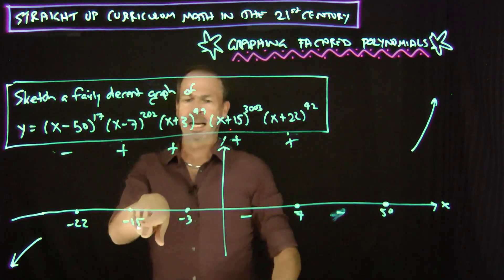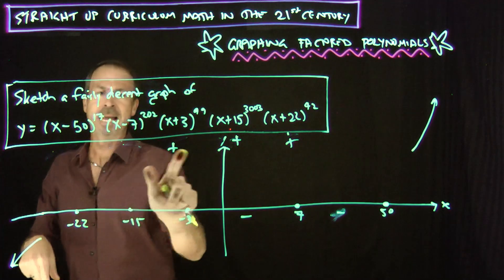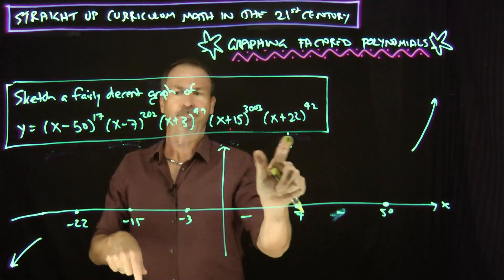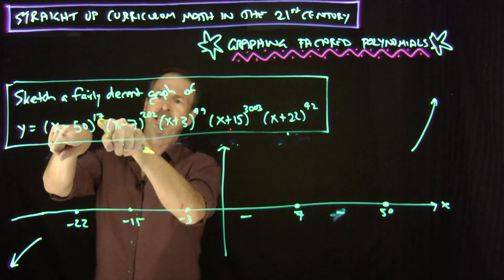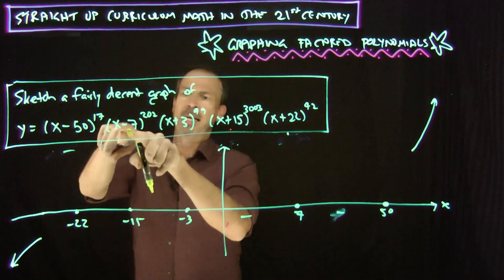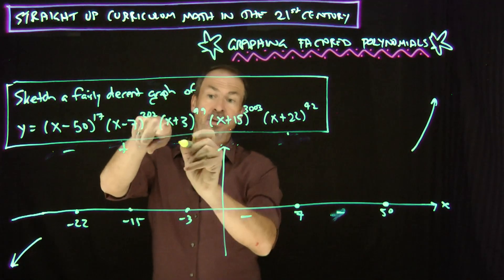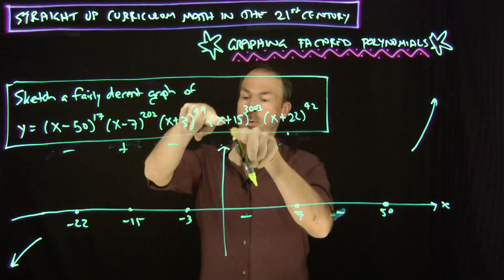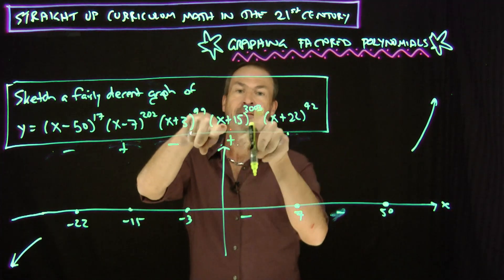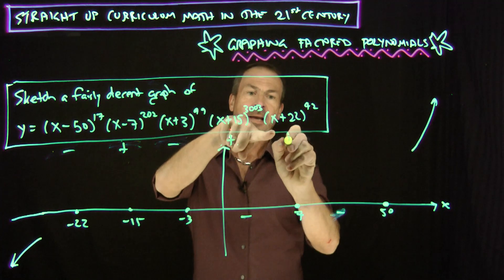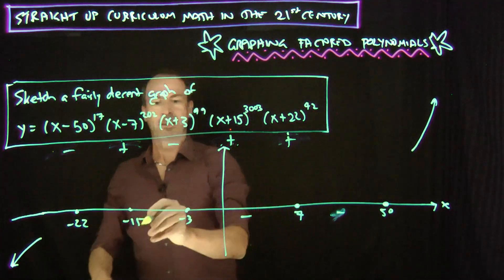Let's try between negative 3 and negative 15. Like, I don't know, negative 10 or something. Negative 10 this time. Alright. Negative 10. Negative 60 to an odd power, negative. Negative 17 to an even power, positive. Negative 7 to an odd power, negative. What are we doing? Negative 10. That'd be positive 5 to positive power, positive. Positive. The whole thing here is positive.